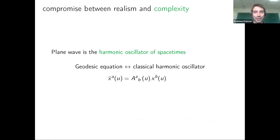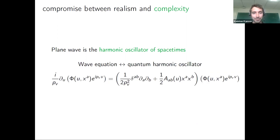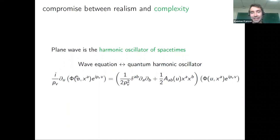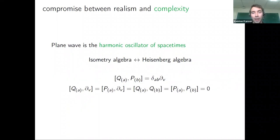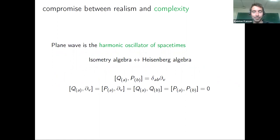Concretely, plane wave spacetimes are the harmonic oscillators of spacetimes in the following sense: the null geodesics on such a spacetime are governed by the harmonic oscillator equation for the transverse coordinates. Looking at the scalar wave equation — where you've separated out the v coordinate, which you can always do since it's covariantly constant — the momentum p_v essentially plays the role of Planck's constant, and the wave equation becomes the quantum harmonic oscillator.